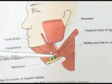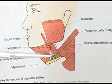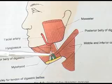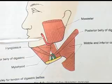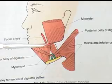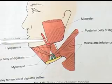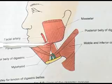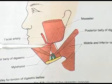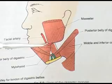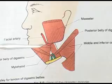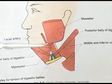Also seen in the figure is the facial artery lying at the anteroinferior angle of the masseter muscle. It is palpable at the lower border of the mandible, where it is known as the anesthetist's artery.